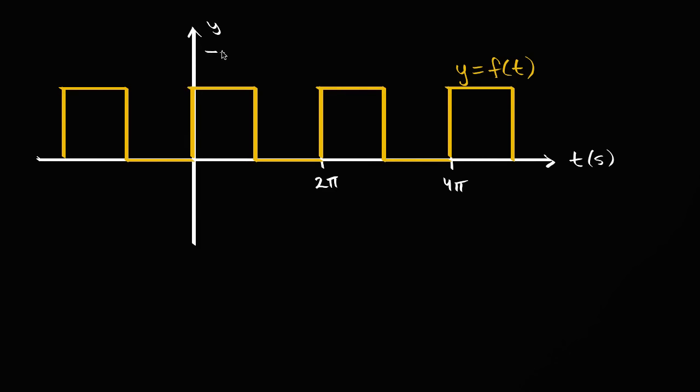And so we could say its period is equal to two pi. If we want to put the units, we could say two pi seconds per cycle. We could also just write s for seconds.